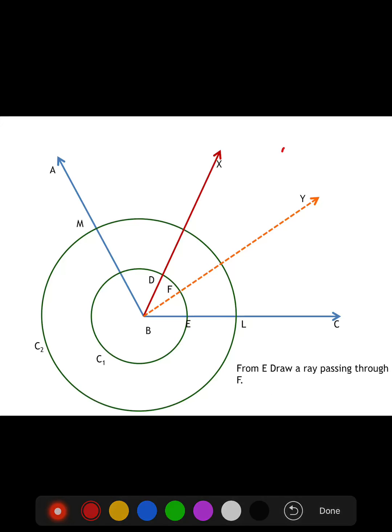Now join EF and from a point D draw a tangent to the circle C1, which cuts EF at a point G. From G, draw a ray parallel to BC, which cuts the circle C2 at a point H.